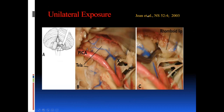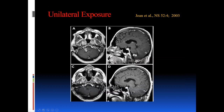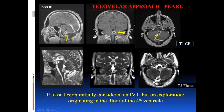For unilateral exposure there's a beautiful paper by Jean and colleagues in Neurosurgery — the same idea from midline to lateral by elevating just one tonsil. You identify the obex, the telachoroidea, mobilize the PICA to make the 45-degree cut, then see the choroid plexus and rhomboid lip and gain access right to the foramen of Luschka. These lesions — small ependymomas, meningiomas, lesions in the fourth ventricle — can be taken out quite successfully. A cavernoma on the opposite side was equally accessible through this approach.